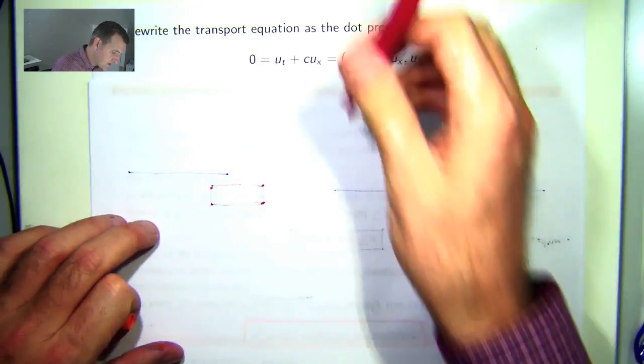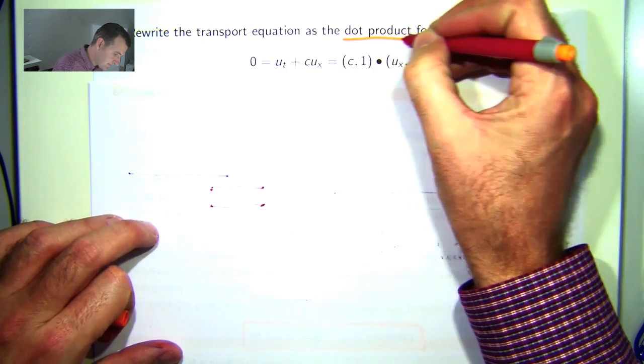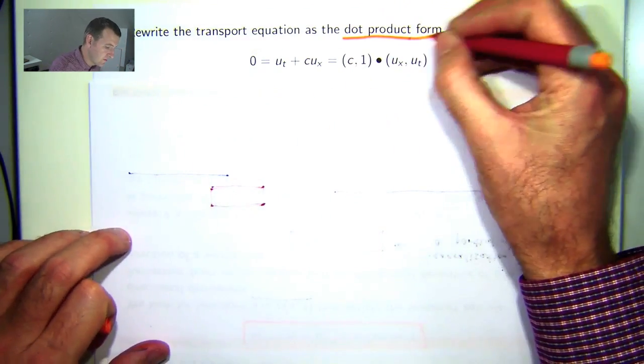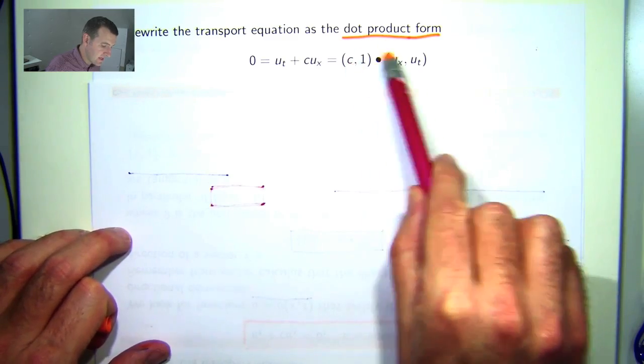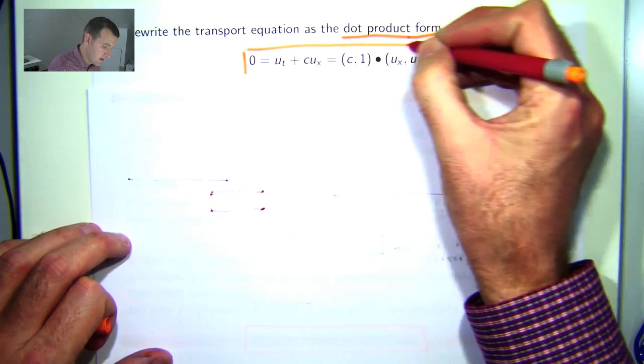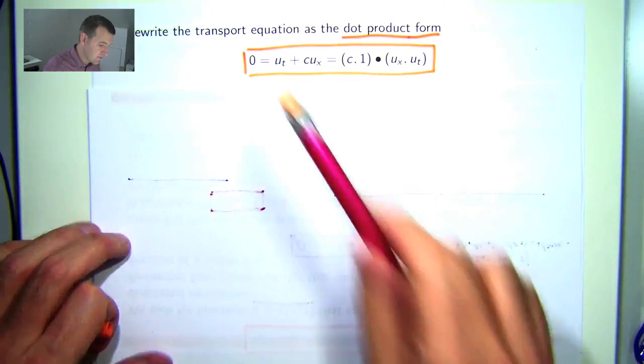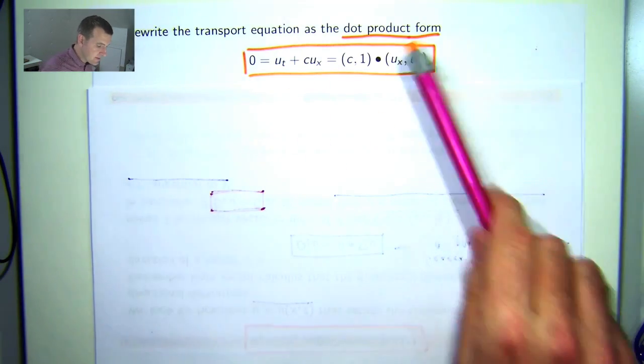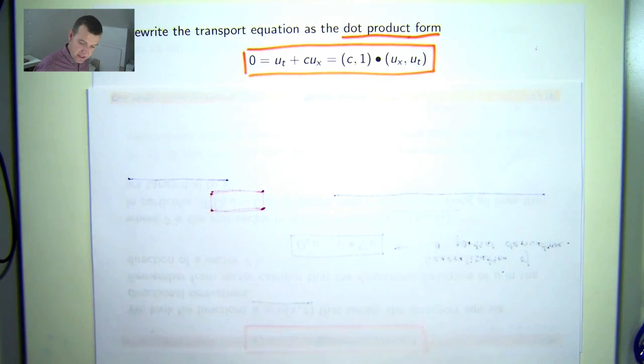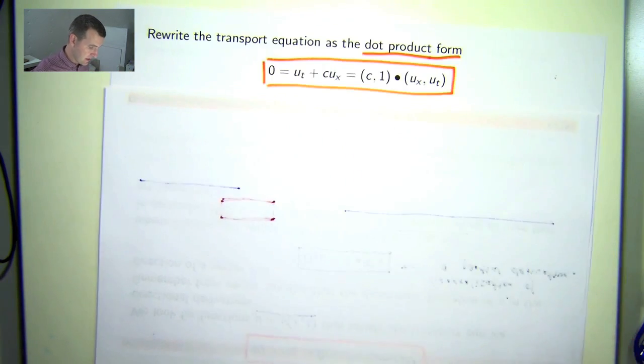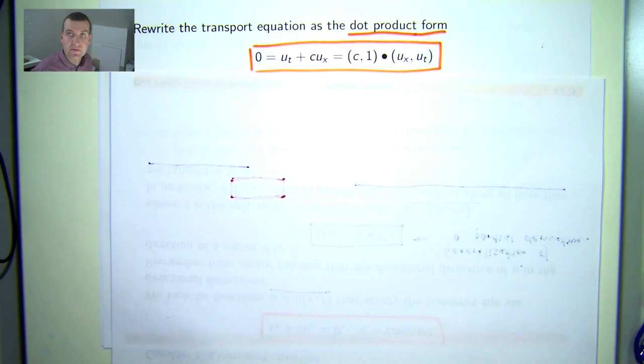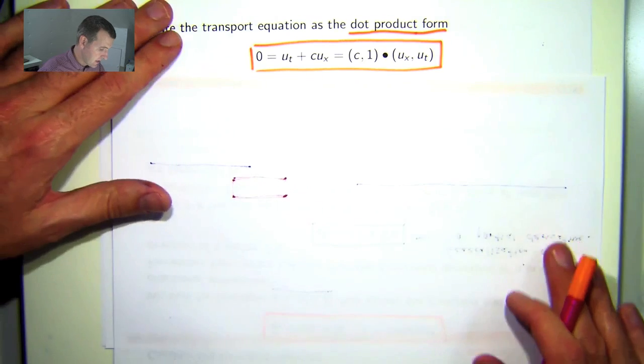So let's factor, if you like, the left-hand side of our transport equation into a dot product form. So if you think of expanding this, you'll readily verify that you'll get this middle expression. And this is almost a dot product, sorry, this is almost a directional derivative. It's not quite there yet though. Why? Because this vector here may not have length one.